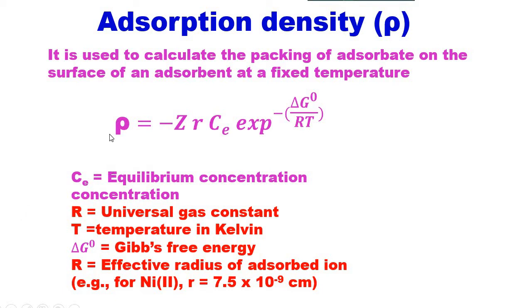It can be written as ρ equals minus Zr Ce exponential minus ΔG⁰ divided by RT, where Ce equals equilibrium concentration, R equals universal gas constant, T equals temperature in Kelvin, ΔG⁰ equals Gibbs free energy, r is the effective radius of adsorbed ion. For example, for nickel, r equals 7.5 times 10 to the power of minus 9 cm. And Z is the valency of adsorbed ion.